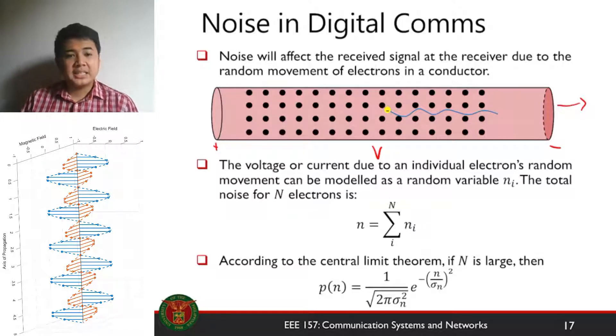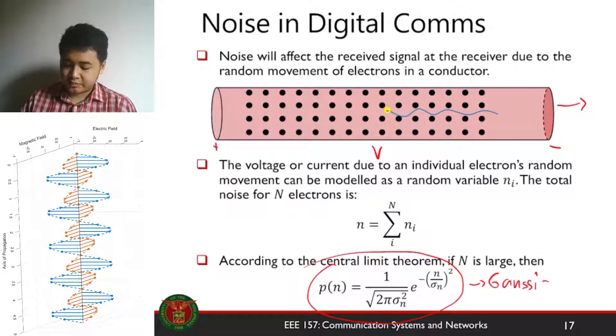Now if n is very large, which is the true case for all large systems, according to the central limit theorem, your probability distribution function for your noise voltage becomes Gaussian. And this is how the additive white Gaussian noise is modeled.